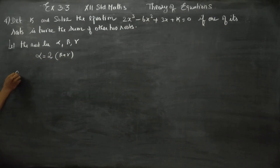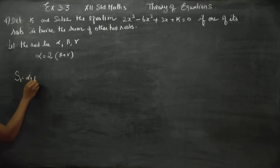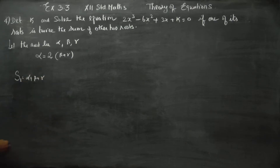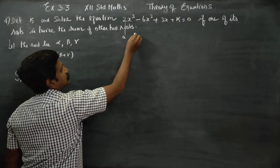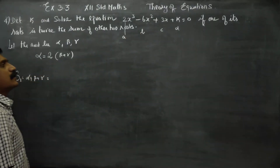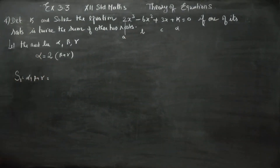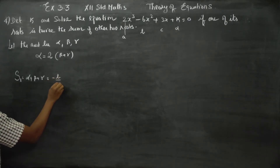First I am going to find S1. S1 means the sum of one root taken at a time: alpha plus beta plus gamma. The formula is S1 = minus B by A. Here A is 2 and B is minus 6, so alpha plus beta plus gamma equals minus(−6)/2, which gives 6/2 = 3.